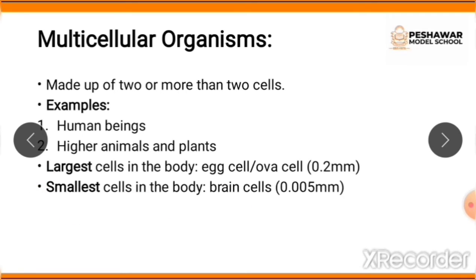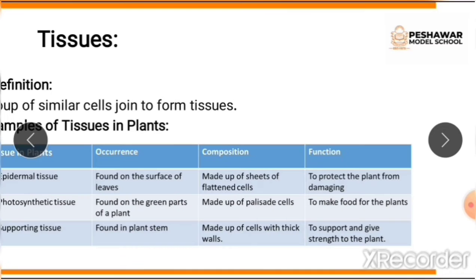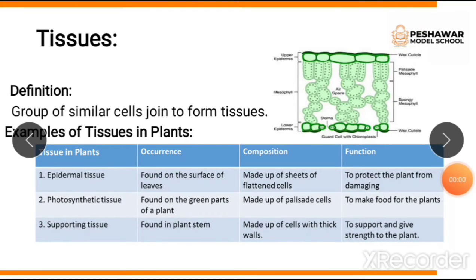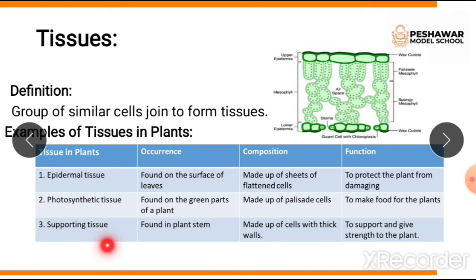The next topic is tissues. Tissues are a group of similar cells; when a group of similar cells join together, they form tissues. Examples of tissues in plants include epidermal tissue, photosynthetic tissue, and supporting tissue. We will discuss each in terms of their occurrence, composition, and function.